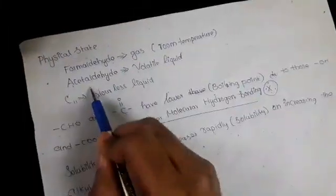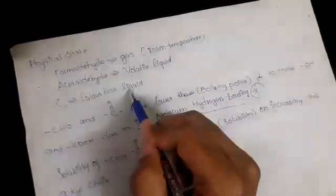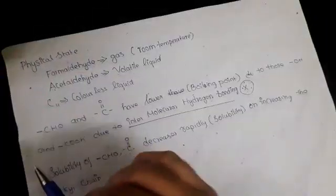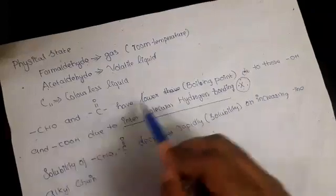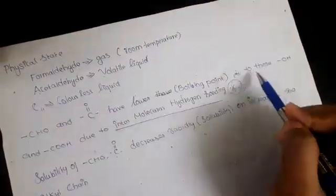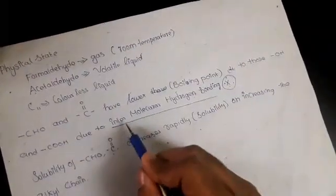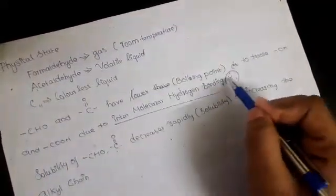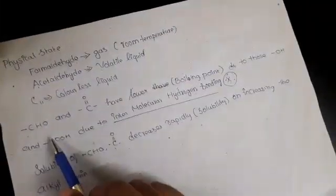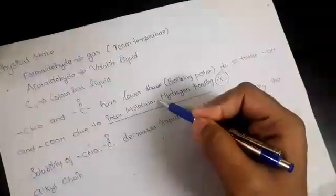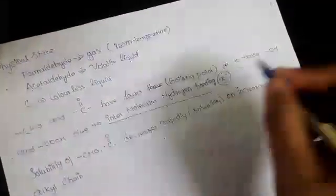Physical properties: Formaldehyde is a gas at room temperature, acetaldehyde is a volatile liquid. Up to 11 carbon atoms, they are colorless liquids; higher ones are solids. Aldehydes and ketones have lower boiling points than alcohols and carboxylic acids due to intermolecular hydrogen bonding. This is very important - the bonding takes place within the molecule.